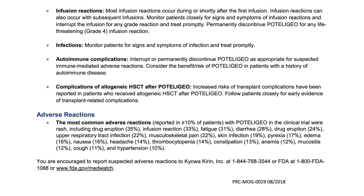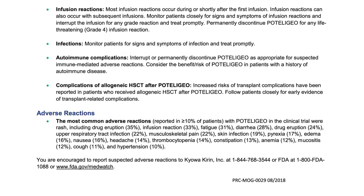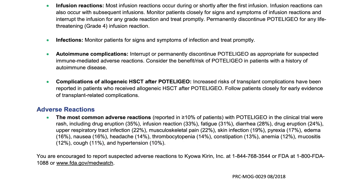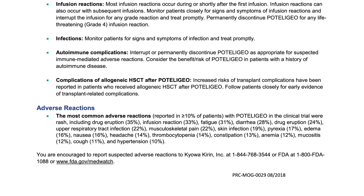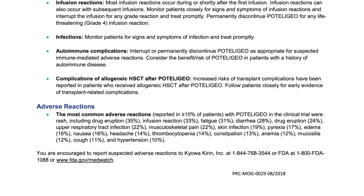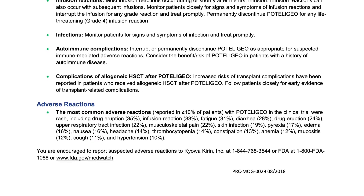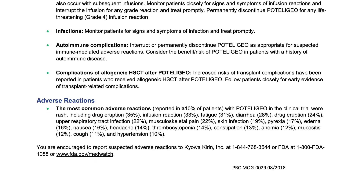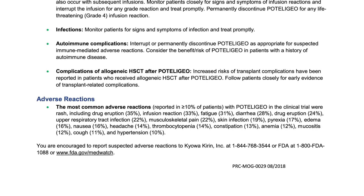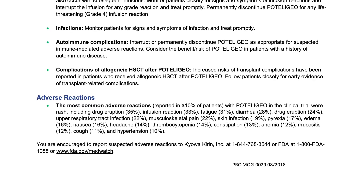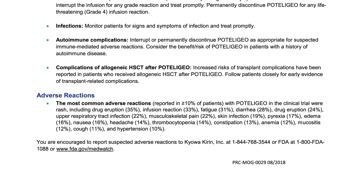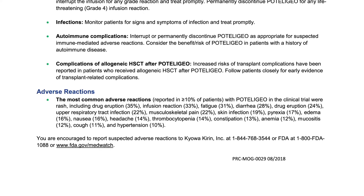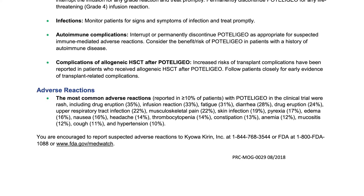Edema 16%, nausea 16%, headache 14%, thrombocytopenia 14%, constipation 13%, anemia 12%, mucositis 12%, cough 11%, and hypertension 10%. You are encouraged to report suspected adverse reactions to Kyowa Kirin, Inc. at 1-844-768-3544 or FDA at 1-800-FDA-1088 or fda.gov/medwatch.